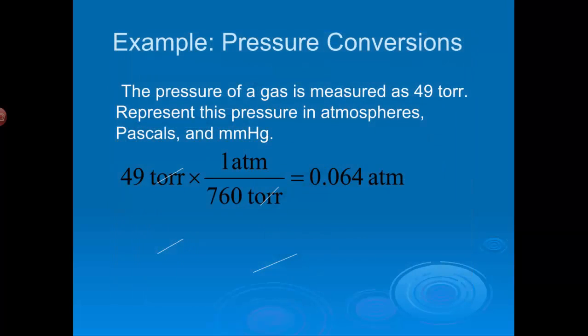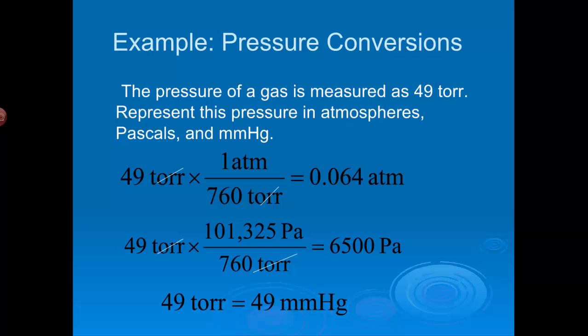Well, let's take a look. 49 torr, the conversion factor is one atmosphere is 760 torr, so that's 0.064 atmospheres. 49 torr, the conversion factor to pascals is 101.325 pascals per 760 torr, so that's 6500 pascals. And 49 torr is equal to 49 millimeters of mercury, because torr and millimeters of mercury are the same.